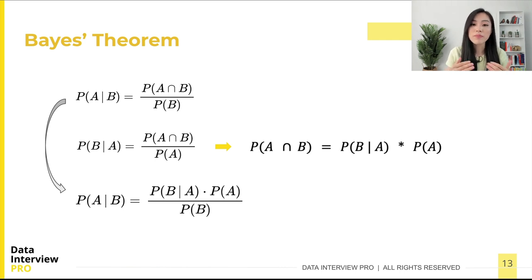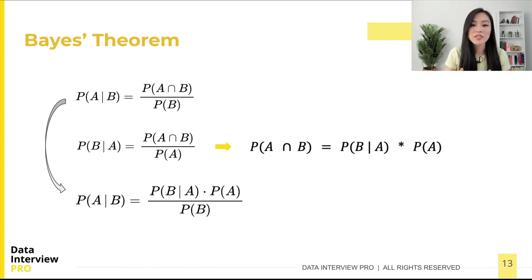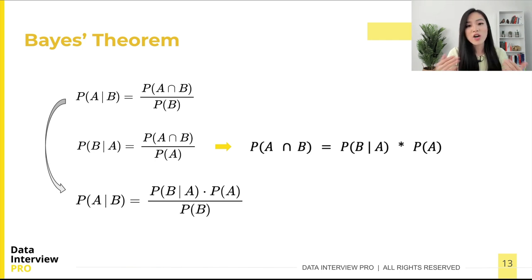Therefore, we can replace the joint probability P(A ∩ B) with P(B|A) multiplied by P(A) in the formula for P(A|B). Doing so gives us Bayes' theorem. Bayes' theorem allows us to calculate the probability of A given B once we know P(B|A), P(A), and P(B). I hope these diagrams help you understand how to derive Bayes' theorem.